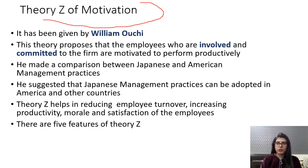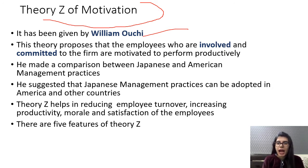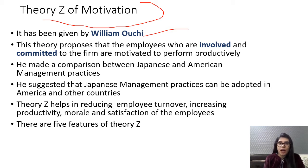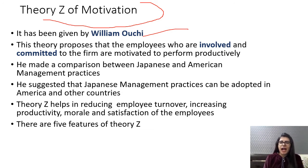Now comes Theory Z of motivation. Yesterday we studied Theory X and Y, given by Douglas McGregor. Theory Z is something different — it has been given by William Ouchi. What Ouchi did is he made a comparison between Japanese and American management practices. When he observed both, he suggested that Japanese management practices can be adopted in America and other countries as well, because the culture Japanese companies have is really productive and good for people and organizations.